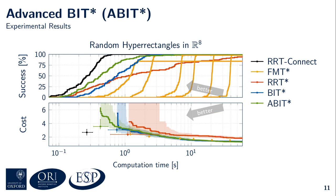These plots show the performance of the planners on an 8-dimensional problem with random hyperrectangles as obstacles. This time, the planners were run 100 times for 1 minute each. More results, including A-BIT*'s best and worst performances relative to RRT-Connect in random rectangle worlds, can be found in the paper.